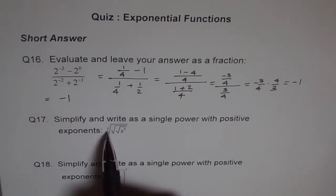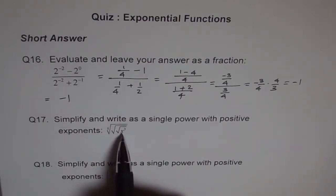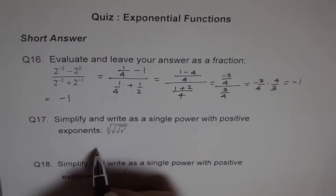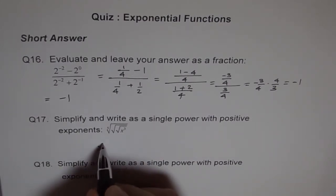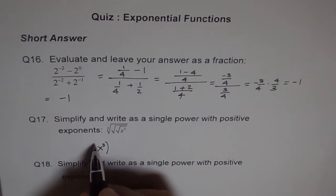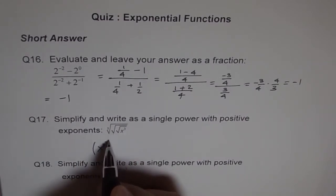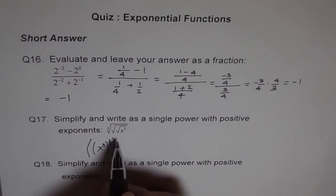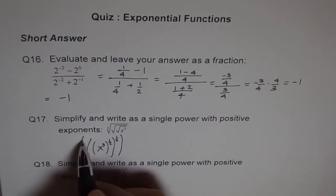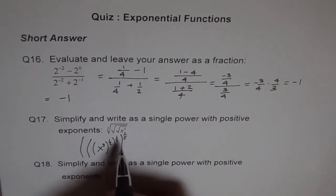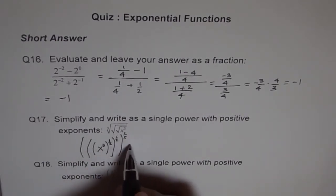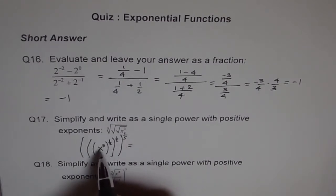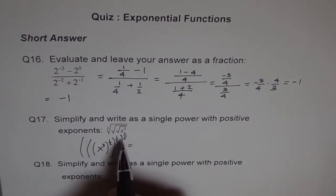Let me do question number 17. We work from inside out. Inside we have x cubed. Over that we have a half exponent — that's a square root — and then another half, and then to the power of 1 over 5. In exponent form, all of these get multiplied together.